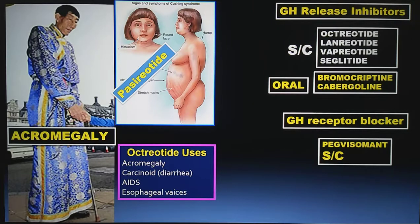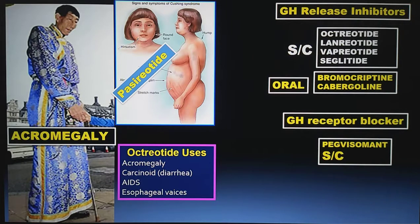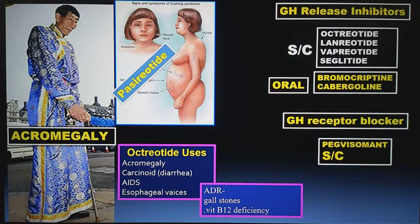Octreotide is also useful to control wasting disorder in HIV patients. Very importantly, octreotide is the drug of choice for controlling bleeding from oesophageal varices — a dangerous complication of portal hypertension where the patient presents with haematemesis. To control bleeding from varices, the drug of choice is octreotide. Adverse effects of octreotide include gallstone formation and vitamin B12 deficiency resulting in megaloblastic anaemia.